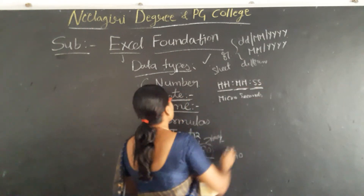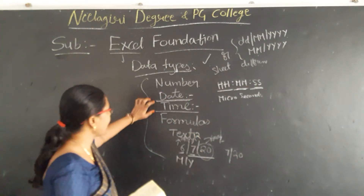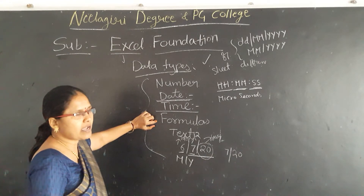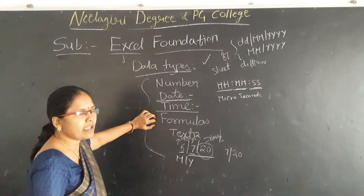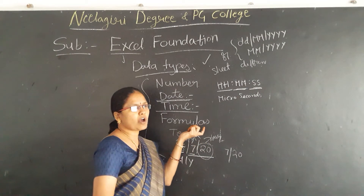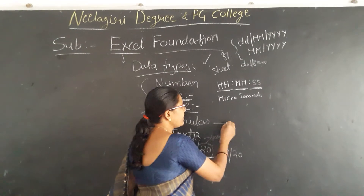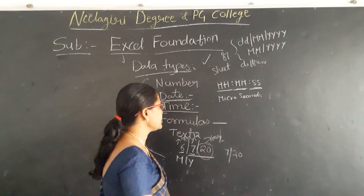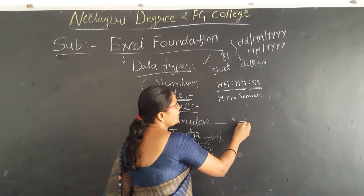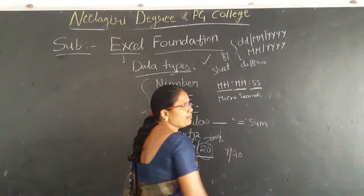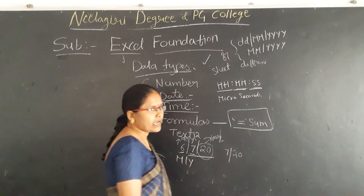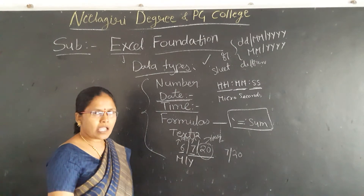We are also able to define data types in formulas. Based on user requirement, when they want to calculate numbers, they use formulas. The formulas work differently — the system can understand them when we put the equal symbol before the formula name. At that time, it will perform the calculation. Otherwise, it will not perform the calculation.